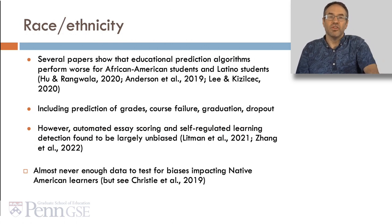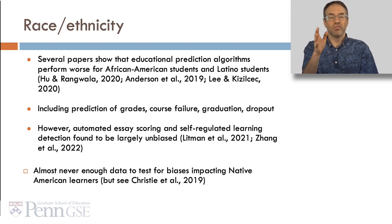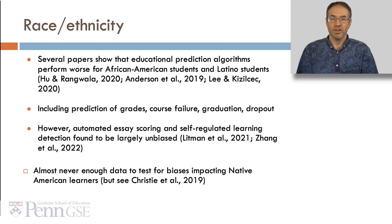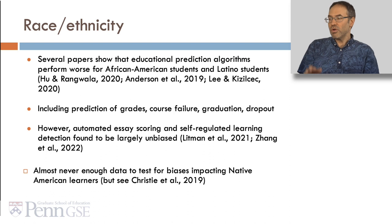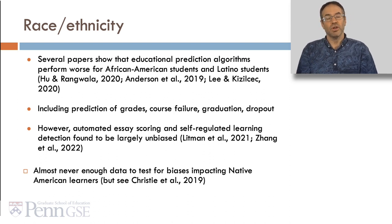Race and Ethnicity: Several papers show that educational prediction algorithms perform worse for African American students and Latino students than students in other groups, including predictions of grades, course failure, graduation, and dropout. However, other types of algorithms, like automated essay scoring and self-regulated learning detectors, have been found to be largely unbiased. It's worth noting that in the United States, there's almost never enough data to test for biases impacting Native American learners, although see Christy Dahl 2019.